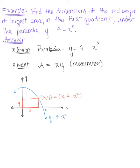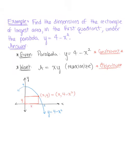So looking up at our objective equation we want to maximize this. The way that it's given to us we need to rewrite this in terms of one variable. So we will use our constraint or the parabola to rewrite this.